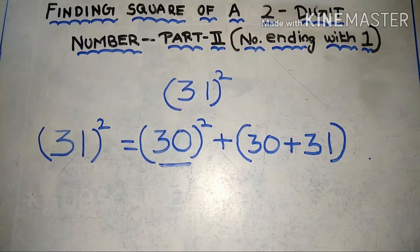Here we have to find the nearest number of 31 which is ending with zero, which is 30. So 31 square is equal to 30 square plus the sum of 31 and the nearest number of 31 ending with zero.